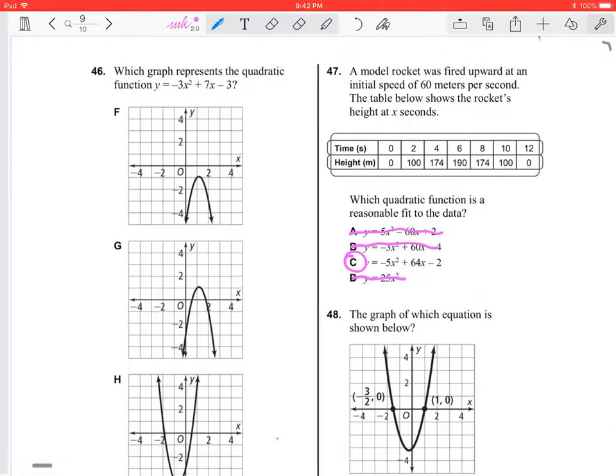Hello, okay, so we're going to get the last couple of pages done. Problem number 46 says: which graph represents the quadratic function y = -3x² + 7x - 3?